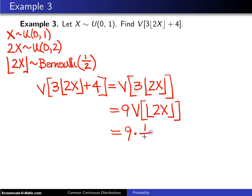So this will be p, which is 1 half, multiplied by 1 minus p, which is also 1 half. And this entire thing evaluates to 9 fourths.